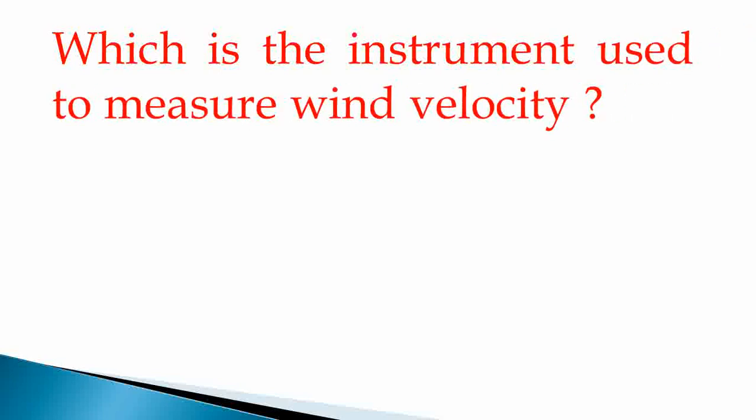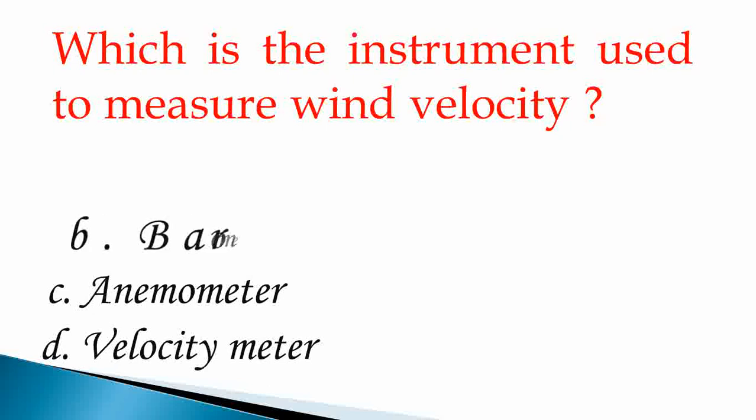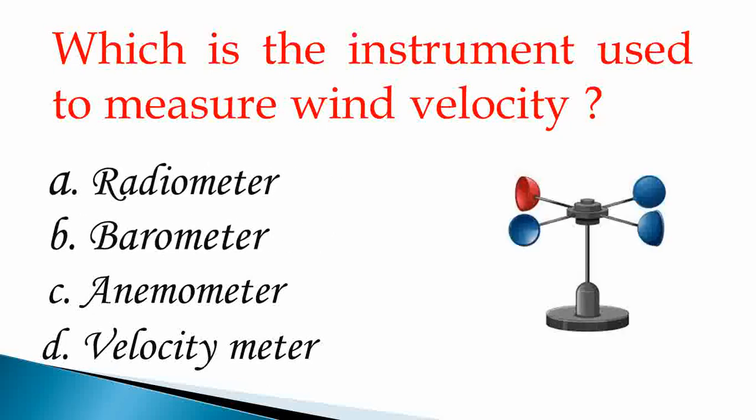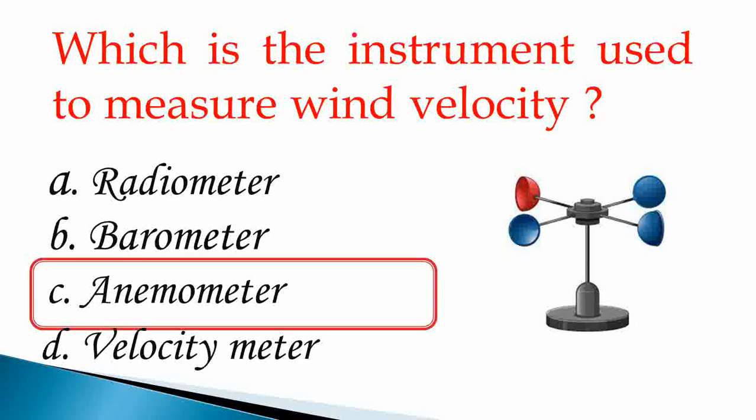Our next question is, which is the instrument used to measure wind velocity? A: Radiometer, B: Barometer, C: Anemometer, D: Velocity Meter. You know the answer kids? I am telling you the answer. Answer is C, Anemometer. It is the instrument used to measure wind velocity.